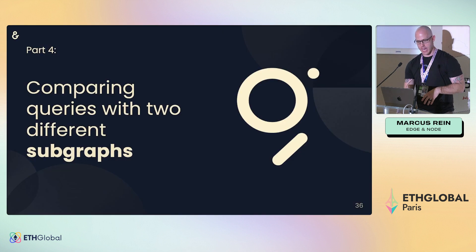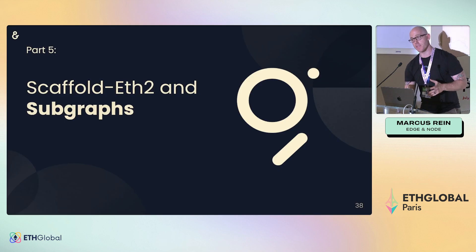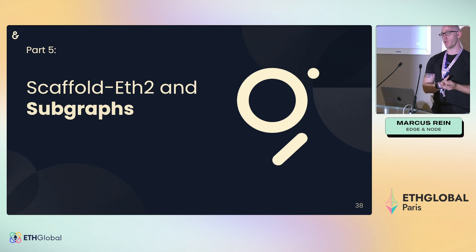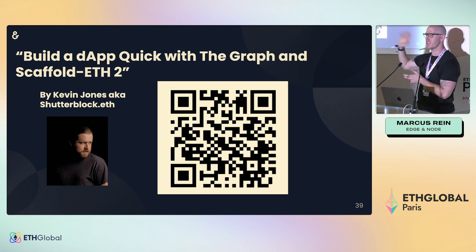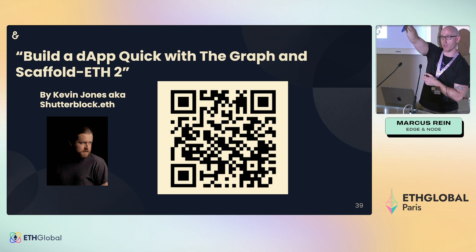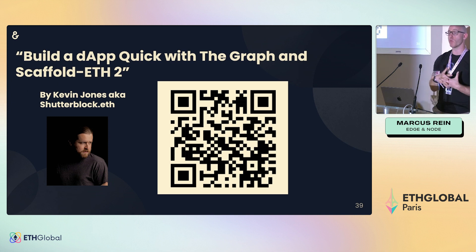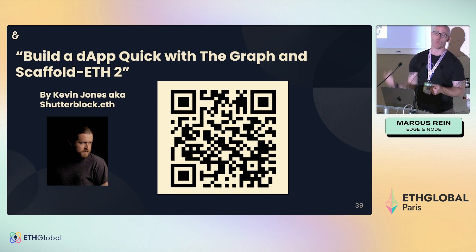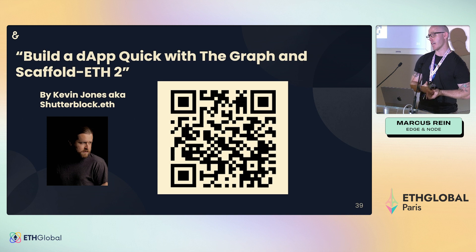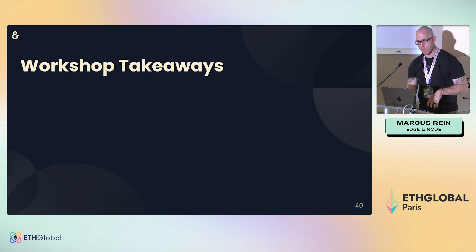We compared queries with two different subgraphs. Finally, Scaffold-ETH 2 — who's tried it? Kevin and Simone worked very hard building a repo that combines a Scaffold-ETH 2 project with a subgraph. It's all Dockerized, contained, and has super fast feedback. When you deploy your smart contract on Hardhat, you can immediately see the front end respond and the subgraph respond as well. If I were starting a hackathon, this is where I'd go.